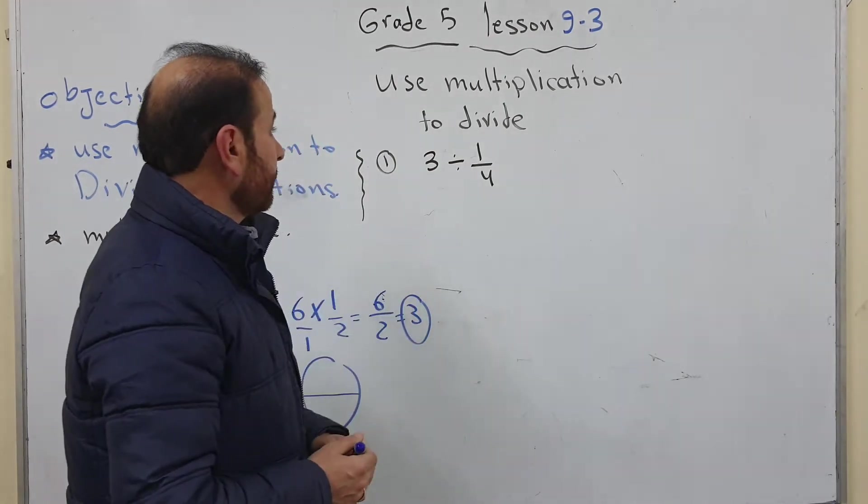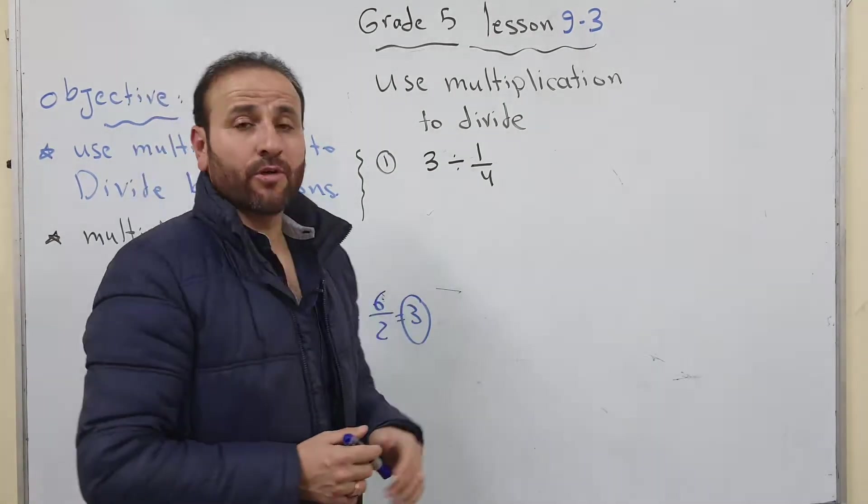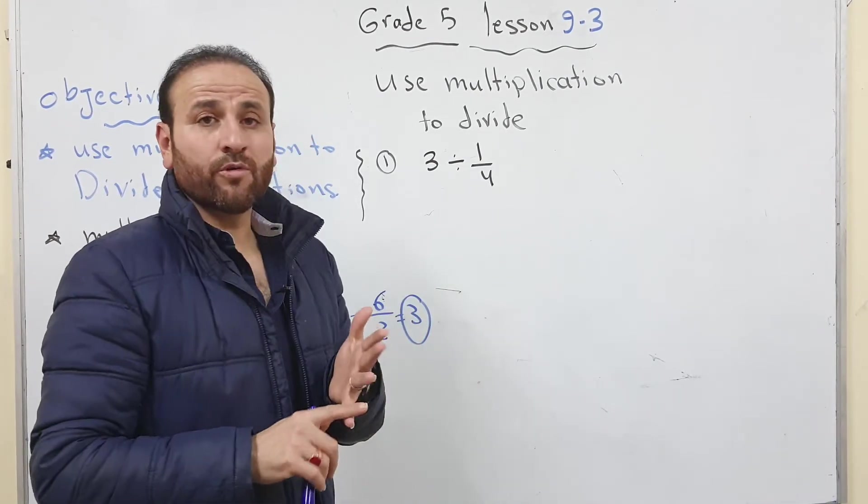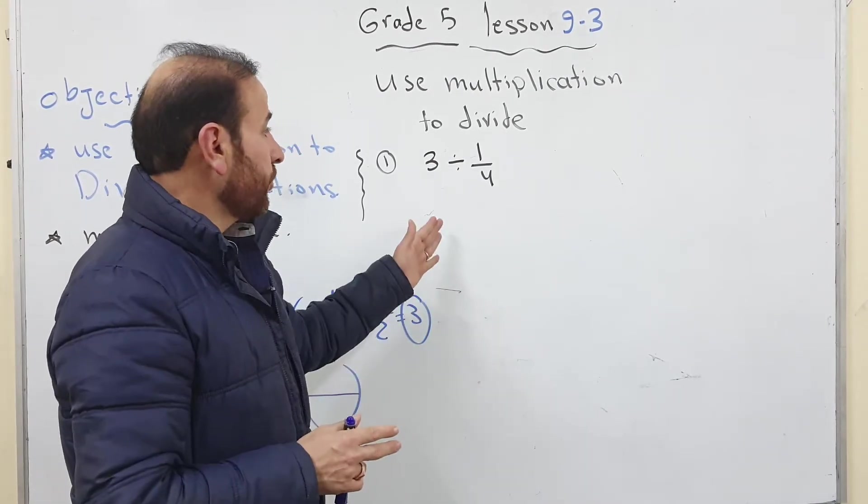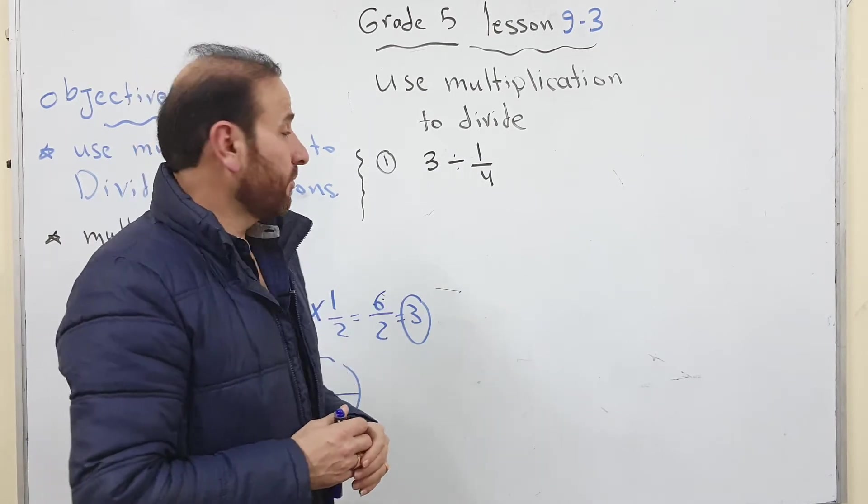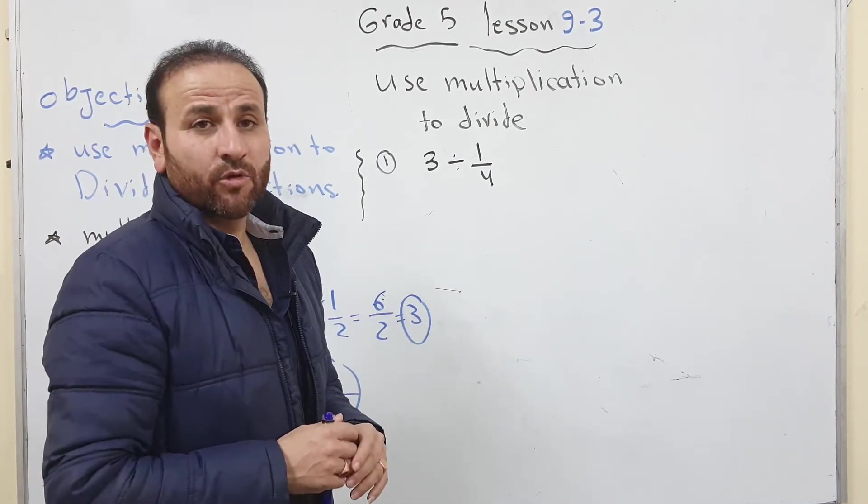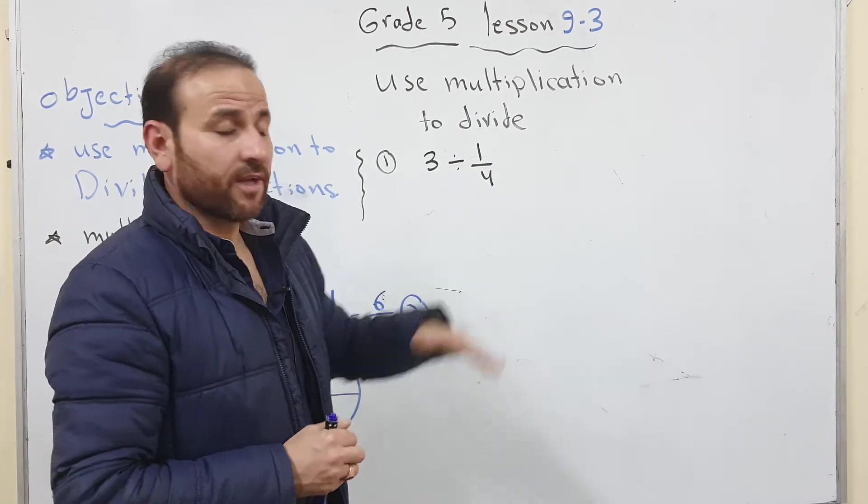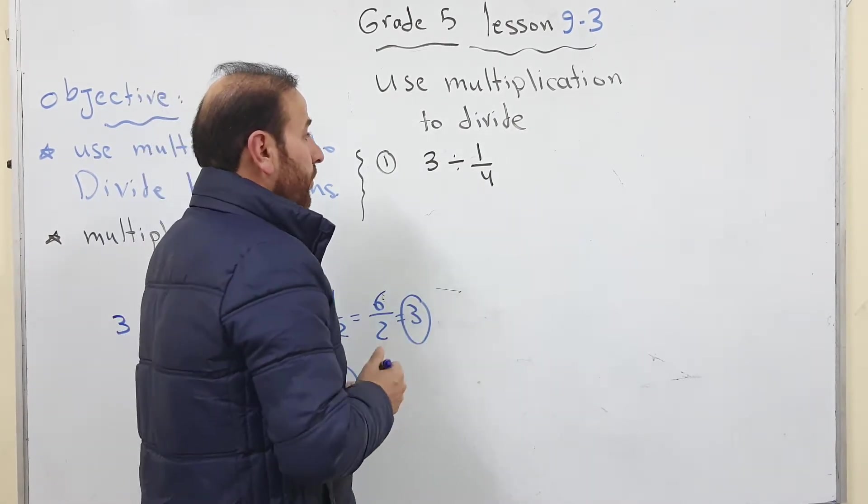I will give you another example. In this example I'm dividing 3 by quarters, 3 divide 1 over 4. So guys I will show you in 2 ways, by using models and by using the rule of dividing by fractions. To use the rule of dividing by fractions we need to remember 3 words.